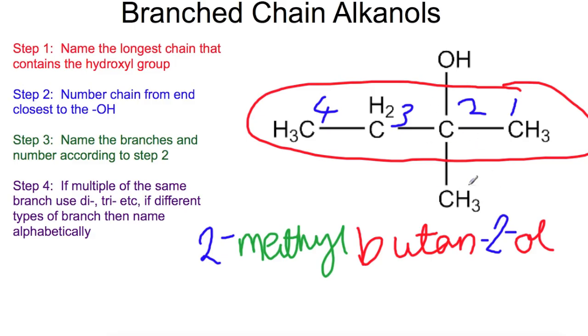If you had more than one branch then you would need to use di or tri if they were the same type of branch. For example if we had another methyl here that would be dimethyl. But if the branches are different, for example if we had an ethyl group you would name them alphabetically. So ethyl before methyl. And that is ignoring any prefix that you have on the front. So any dis or tris.